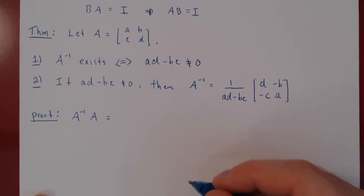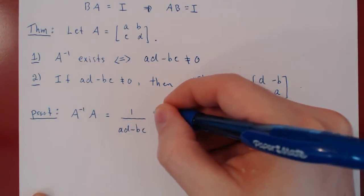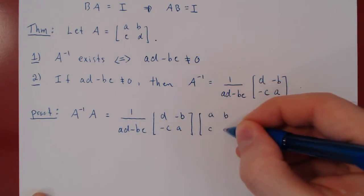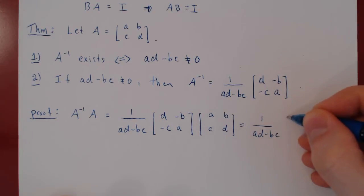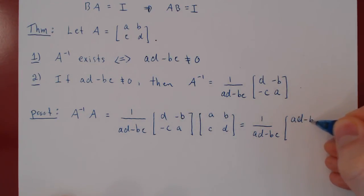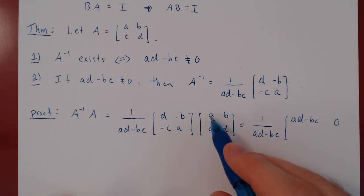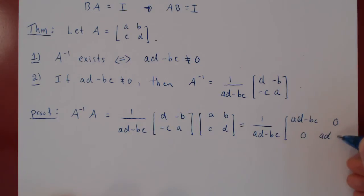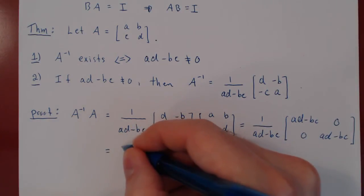Let's see if we get I. What we claim is A inverse = (1/(ad - bc)) times [d, -b; -c, a], times the matrix [a, b; c, d]. Leaving the scalar multiple up front: first row, first entry: da - bc = ad - bc; first row, second entry: db - bd = 0; second row, first entry: -ca + ac = 0; second row, second entry: -bc + ad = ad - bc. Multiplying every entry of this matrix by 1/(ad - bc) gives the 2 by 2 identity matrix.